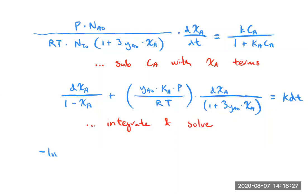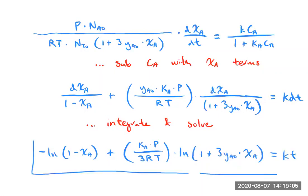So you have a minus natural log of 1 minus conversion of A plus KA times P over—you get a coefficient 3 that comes out from here after taking the integral—times the natural log of 1 plus 3 YA0 times conversion of A. And all of that equals K times T. So that is your expression for how conversion changes as a function of time.